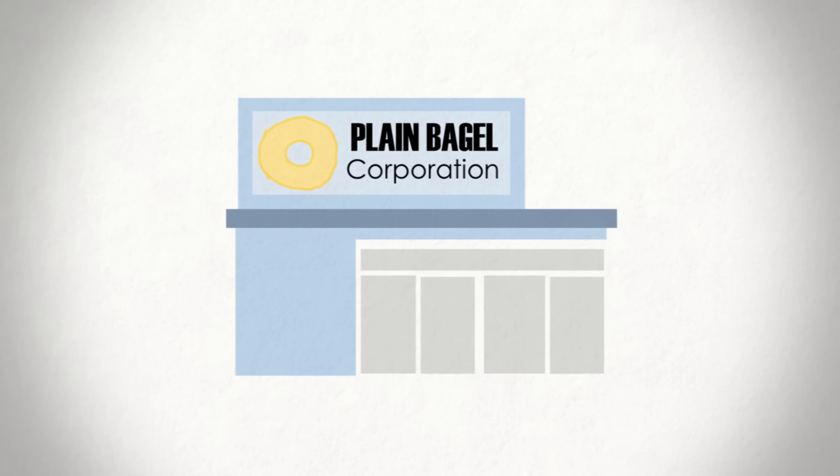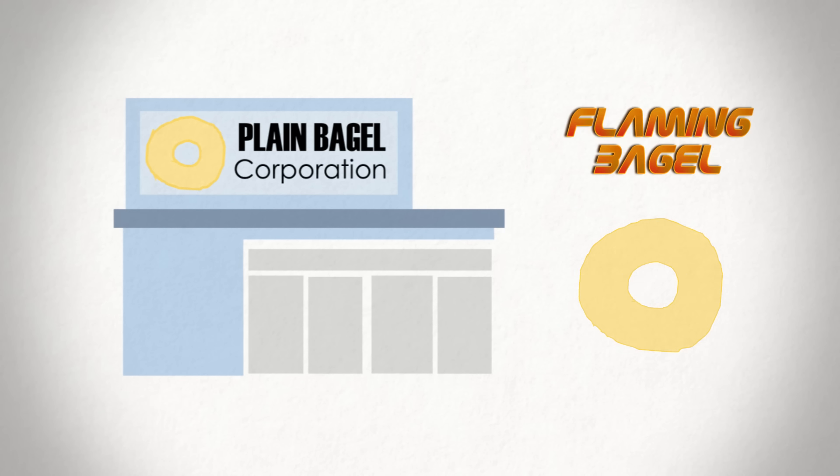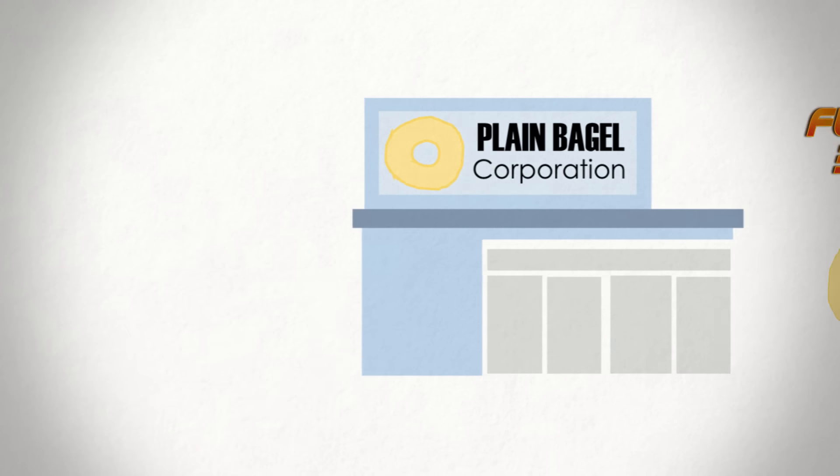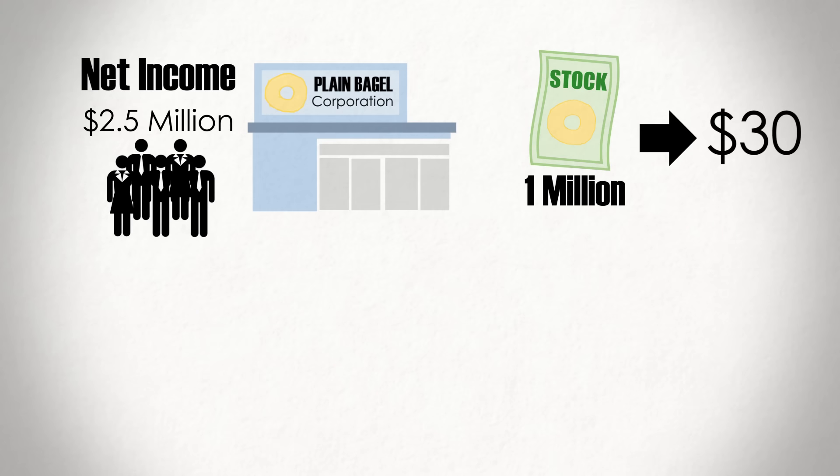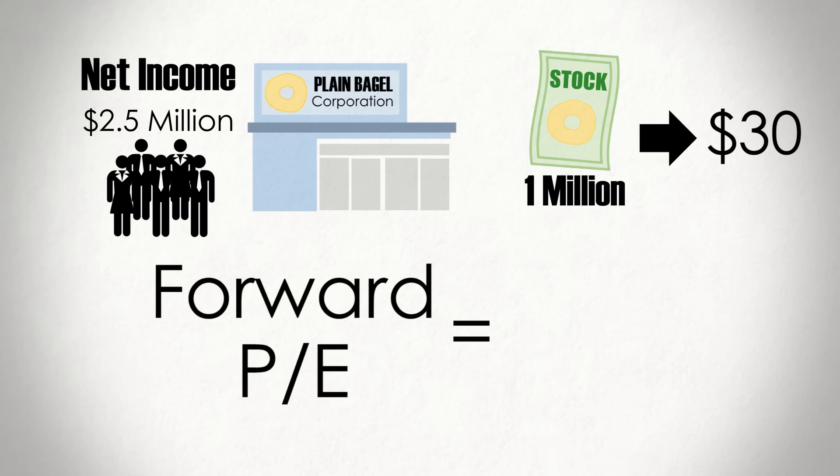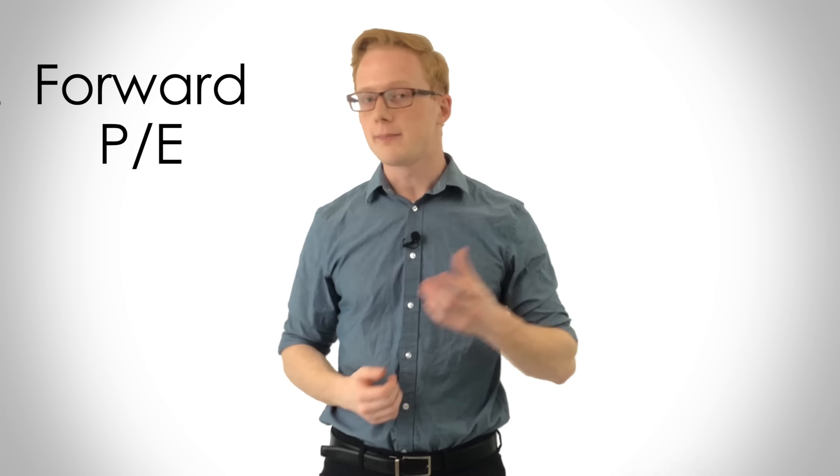For example, let's say that Plain Bagel Co. is expected to launch a new Bagel product next year. And as a result, analysts are expecting earnings to increase to $2.5 million next year. In this case, assuming everything else remains unchanged, Plain Bagel Co.'s forward P-E multiple would equal 12 times. Now, the clear problem with forward multiples is that they rely on forecasts, which may not pan out, but they can still help gauge the value of a stock and how much investors are paying up for a company's potential profit.